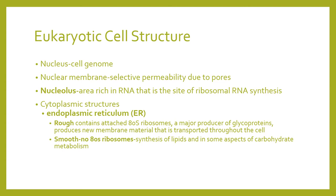The substance surrounding the nucleus is the cytoplasm, and there are important structures located in the cytoplasm. One is your endoplasmic reticulum or ER, composed of two types: the rough ER contains attached ribosomes and is the major producer of glycoproteins, producing new membrane materials transported to all parts of the cell. The smooth endoplasmic reticulum contains no ribosomes and is the site of lipid synthesis and some aspects of carbohydrate metabolism.